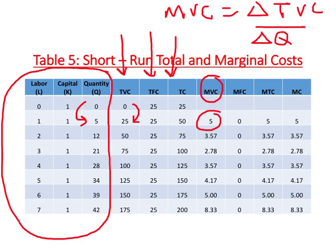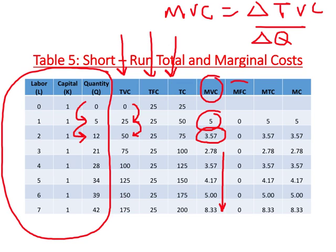The firm has already produced 5 units and increases output to 12. TVC increases from 25 to 50, so change in TVC is 25. Change in Q is 12 minus 5, which is 7. Dividing 25 by 7 gives 3.57. In this way we can calculate all of the MVC values.